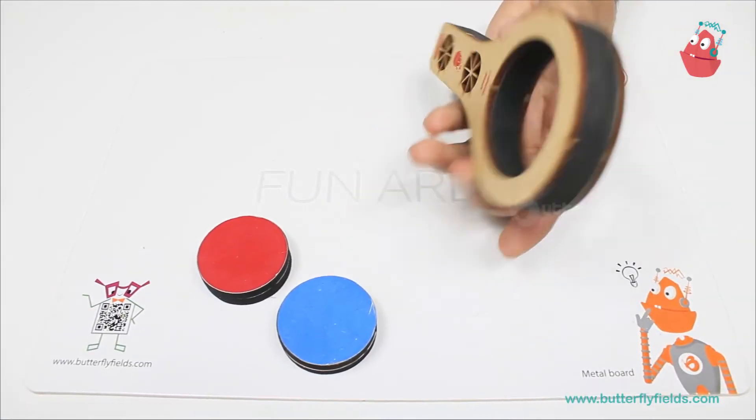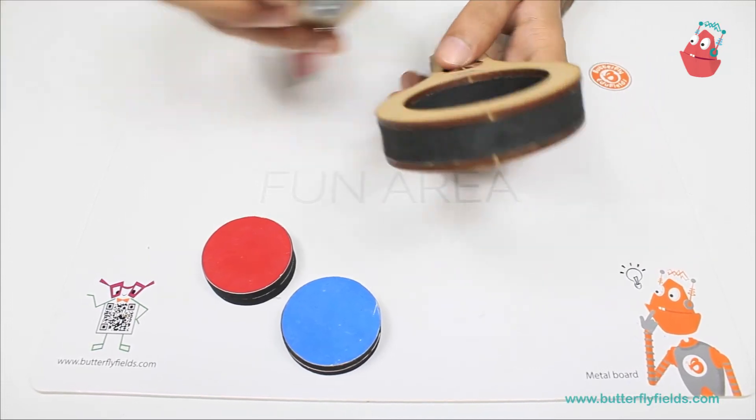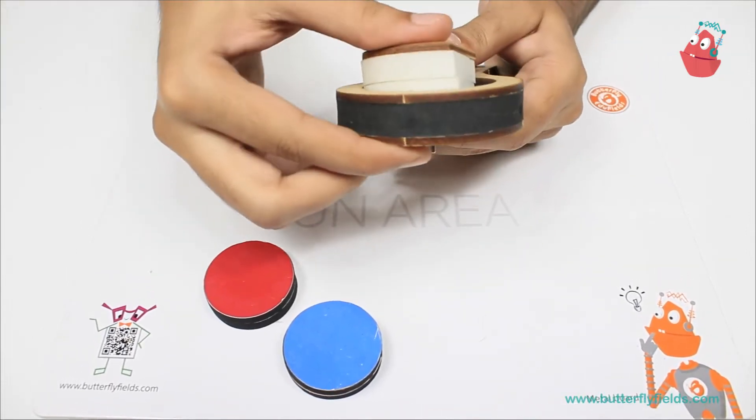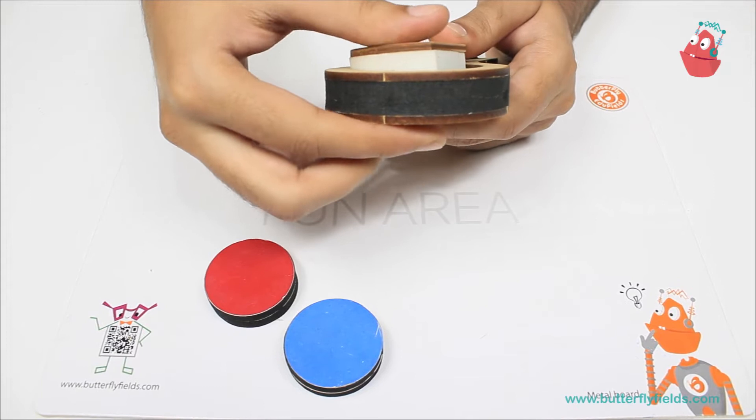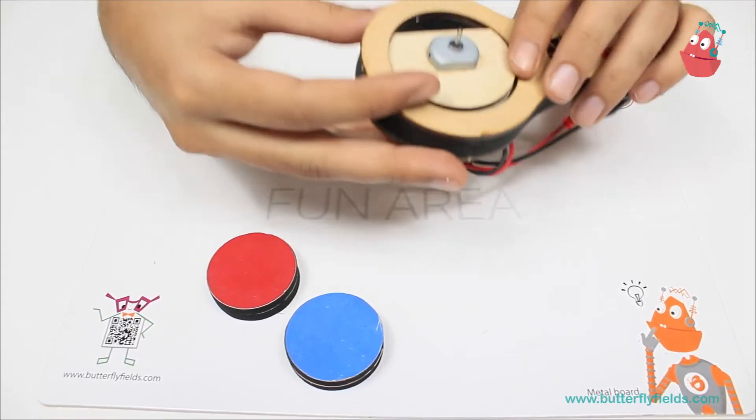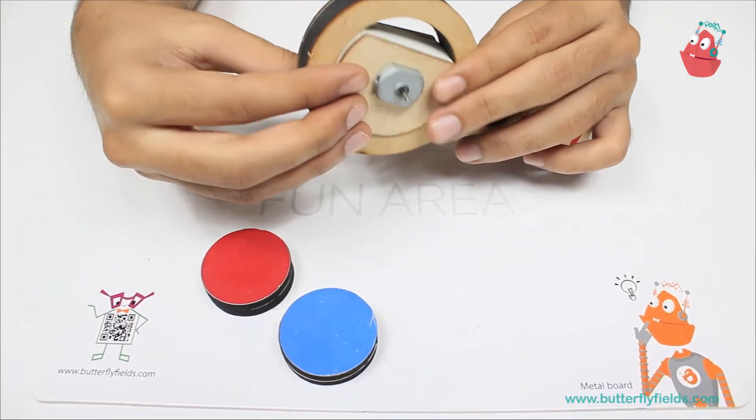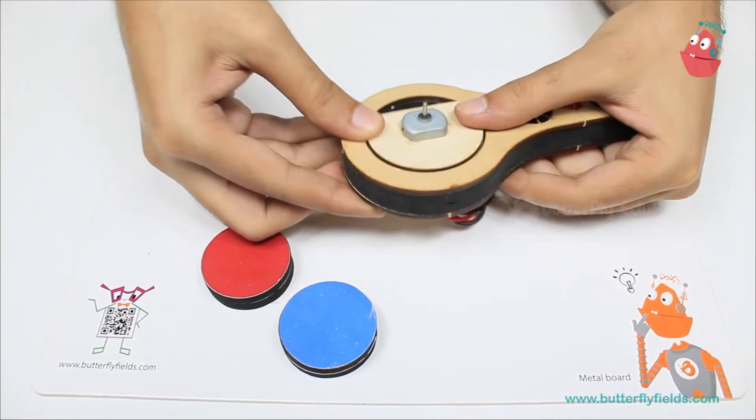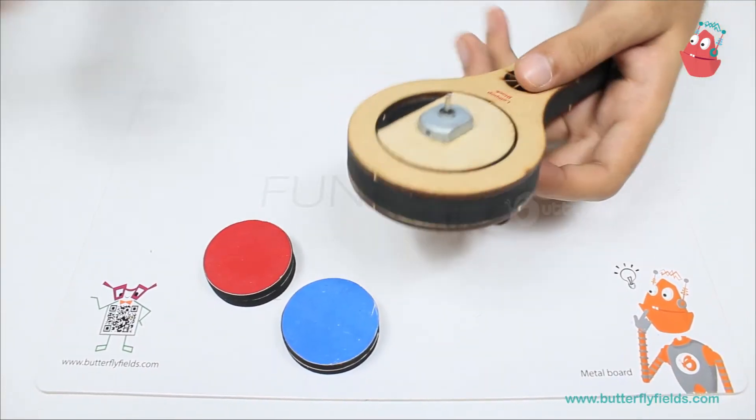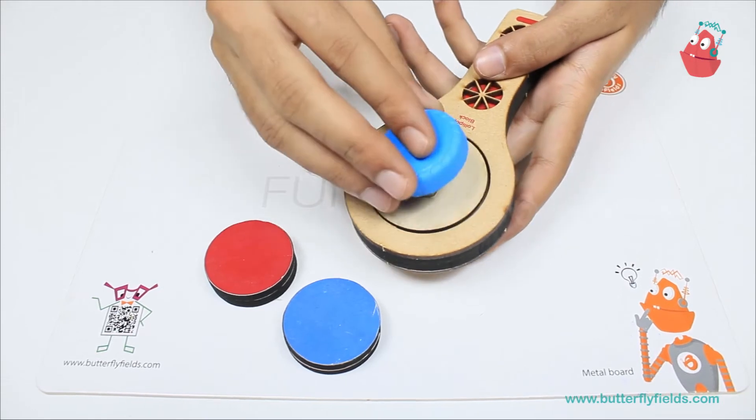So first we'll take a lollipop block and attach a motor to it. Make sure that the motor stands parallel to the lollipop block, and attach a cap to it.